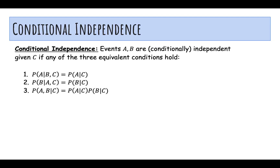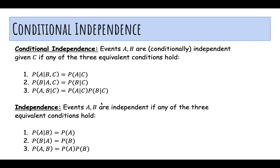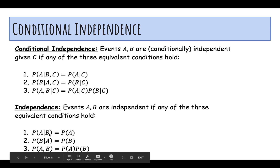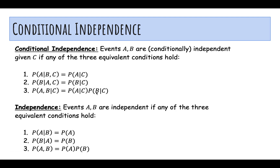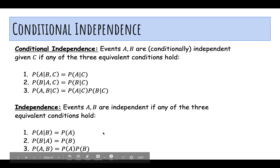Now we'll define conditional independence. Events A and B are conditionally independent given C if any of the three equivalent conditions hold. The definition is the same as independence except we're conditioning on C everywhere: P(A|B,C) = P(A|C), P(B|A,C) = P(B|C), and P(A and B|C) = P(A|C) × P(B|C).